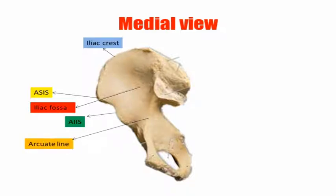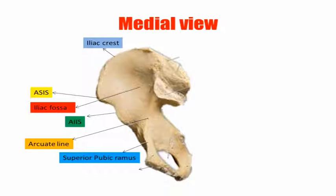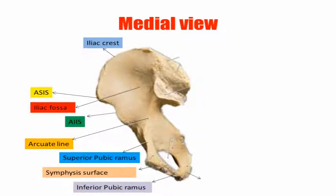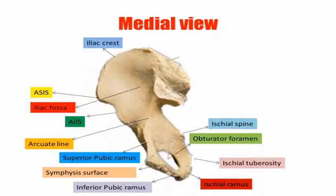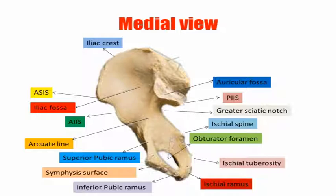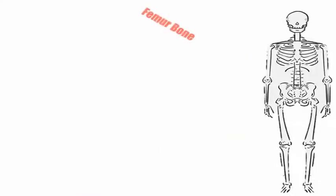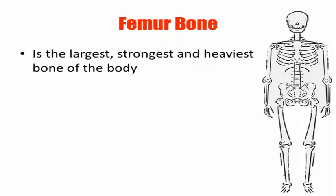This is the arcuate line, the superior pubic ramus, and the symphysis surface — the pubic symphysis is formed between the two hip bones. This is the inferior pubic ramus and the ischial ramus, the ischial tuberosity, and the obturator foramen. The ischial spine is also visible here, as is the greater sciatic notch. This is the posterior inferior iliac spine and the auricular surface, which is shaped like an ear — that is why it is called the auricular surface. This is where it forms the sacroiliac joint.